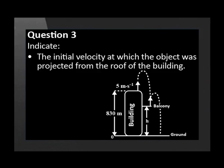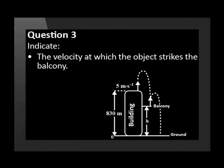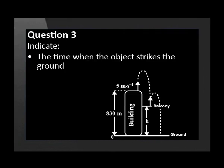Indicate the initial velocity at which the object was projected from the roof of the building, the velocity at which the object strikes the balcony, the time when the object strikes the balcony, and the time when the object strikes the ground.